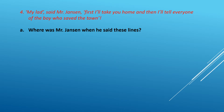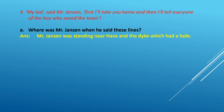Question A: Where was Mr. Jensen when he said these lines? Mr. Jensen was standing near Hans. When Hans was calling for help, Mr. Jensen came out with his dog, saw what was happening, and then called the people who repaired the dike. So he was standing near Hans and the dike which had a hole. The answer: Mr. Jensen was standing near Hans and the dike which had a hole.